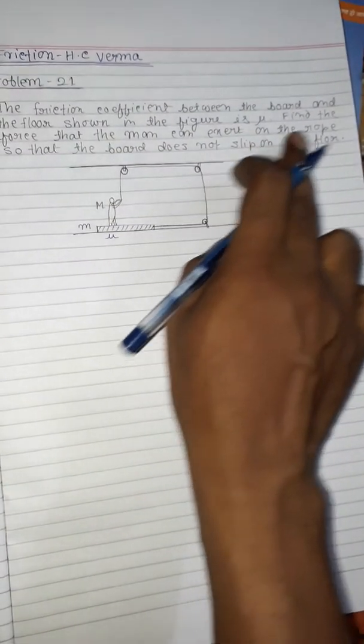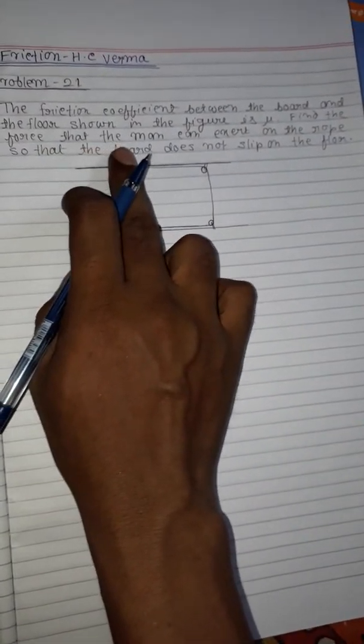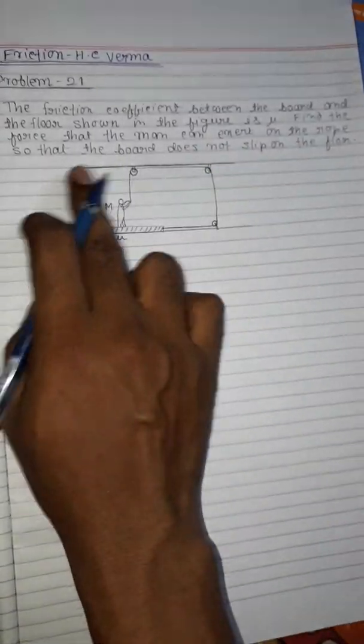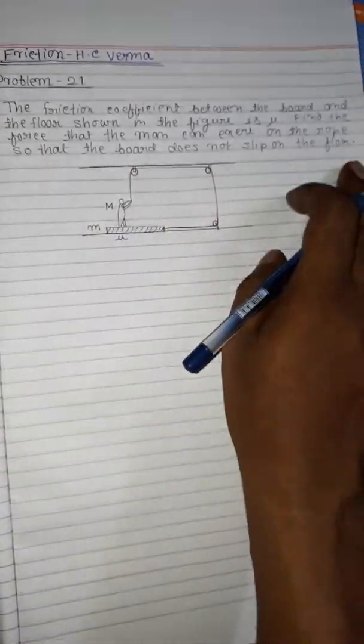The question is: find the force that the man can exert on the rope so that the board does not slip on the floor.